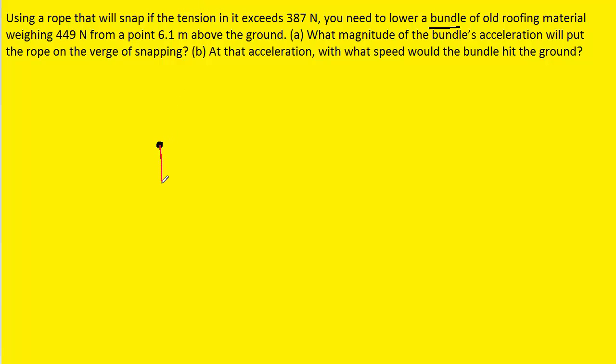Now we have a downward force of gravity acting on the bundle and we can call that downward force the weight. But then we also have an upward force of tension that is present because of the rope that's attached to the bundle and that is pulling up on it, and we can label that force the tension or T.